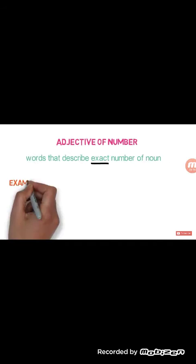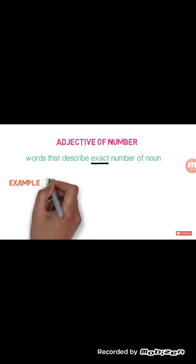Adjective of number — so what is adjective of number? Adjective of number refers to words that describe the number of a noun or pronoun, describing the exact number of the noun. For example: 'I have 20 pens in my home.' Here '20' is the adjective of number — it describes how many pens I am having.